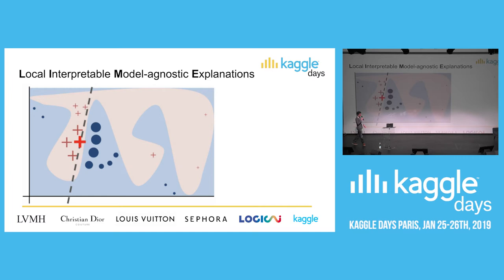Alberto already explained LIME, but let me give another take. The red cross is the prediction we're trying to explain. This is a plot with two features, and we're trying to separate a blue region from the pink region. We approximate a complex decision boundary at one point by a simple model - in this case a linear model. We sample many examples close to the point we're trying to explain, and build a simple linear model that gives approximately the same prediction. This explanation is approximately correct near this example, and it's trivial to explain a linear model - you just analyze its coefficients.